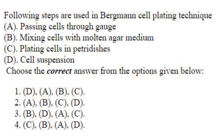Following steps are used in Bergman cell plating technique, which is used to isolate and culture individual cells. First will be cell suspension, D. D is there only in option 1. Then comes passing cells through gauge, A. Then mixing cells with molten agar medium, B. And plating cells in Petri dishes, C. So the answer is D, A, B, C — option 1.